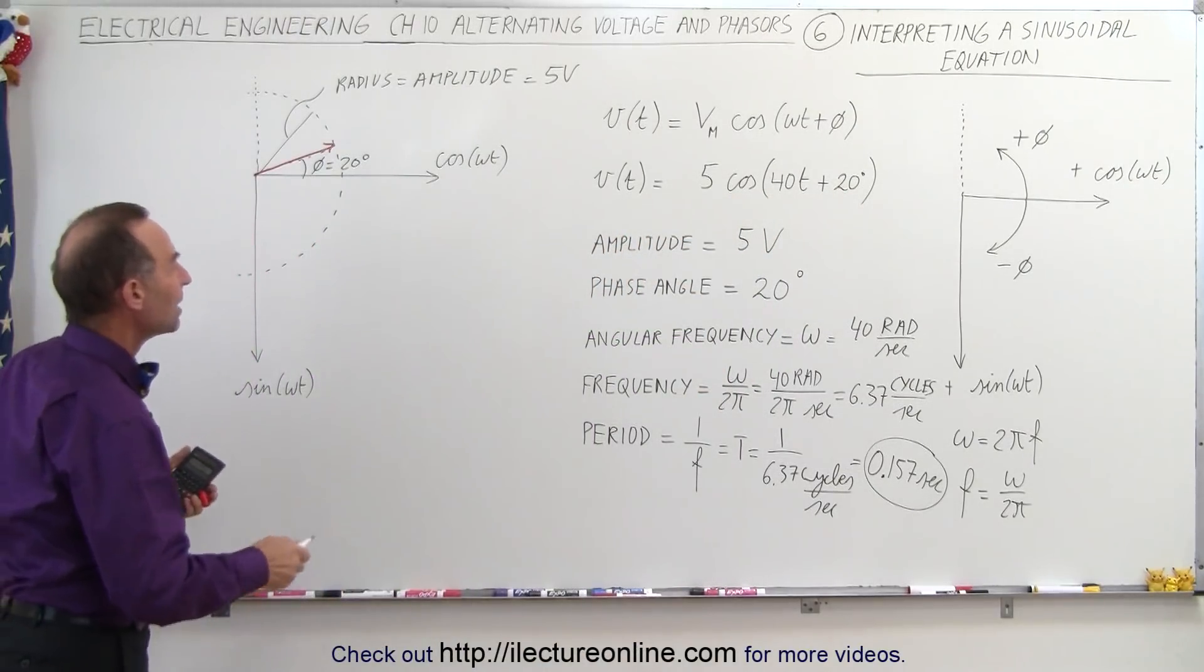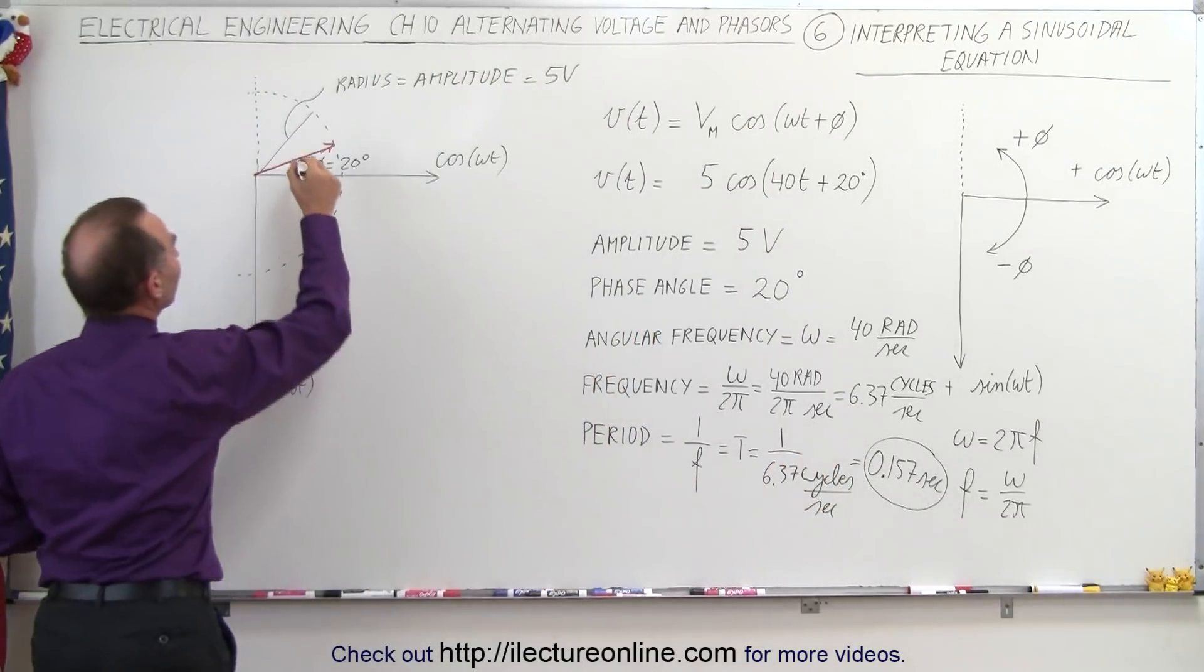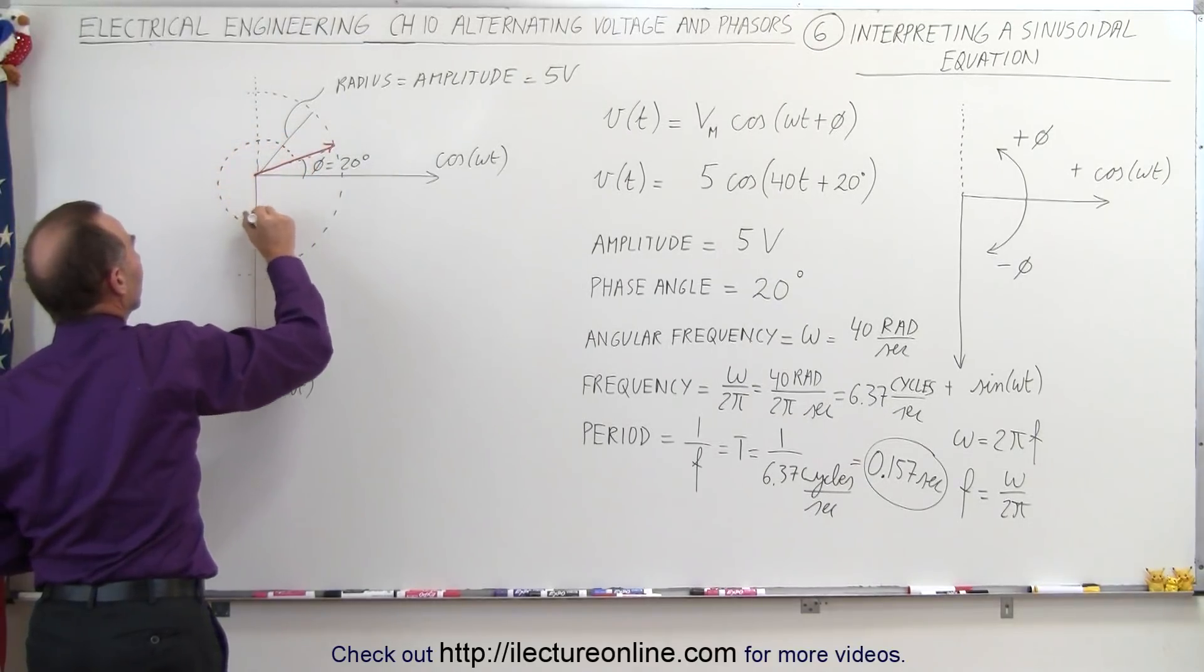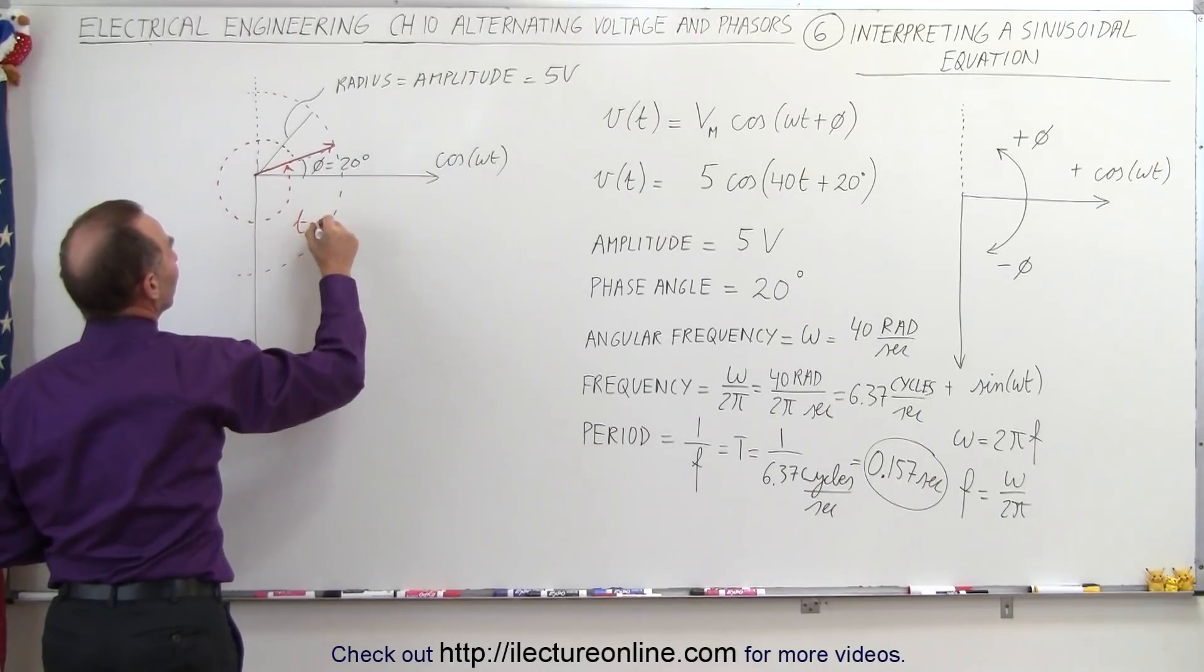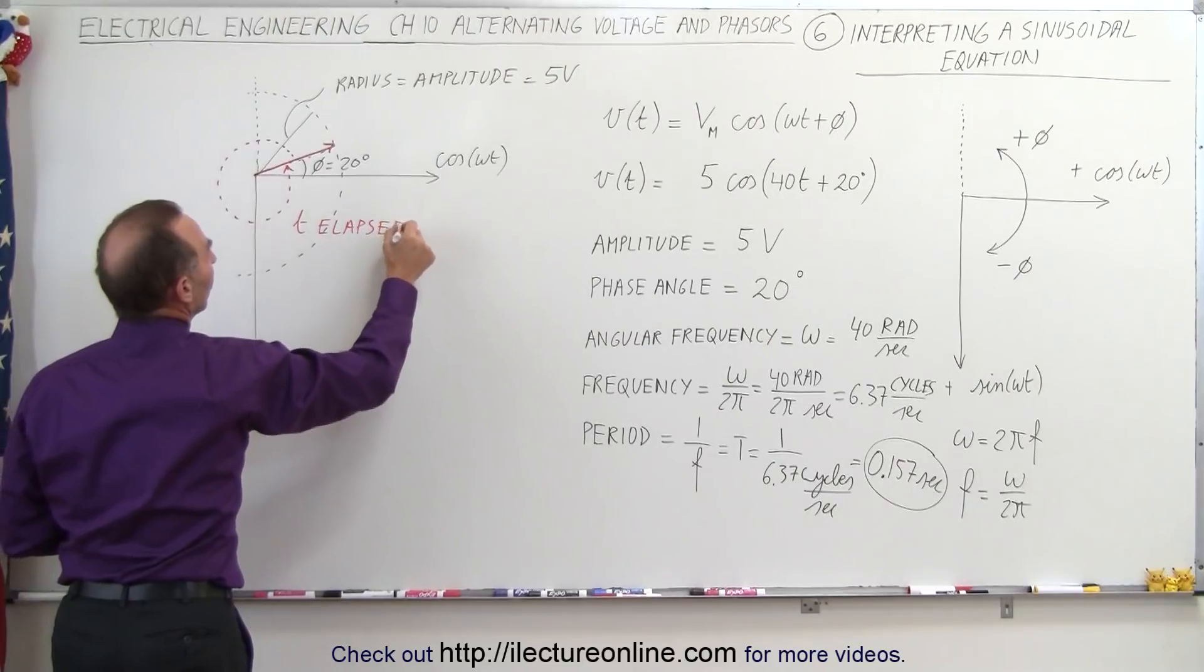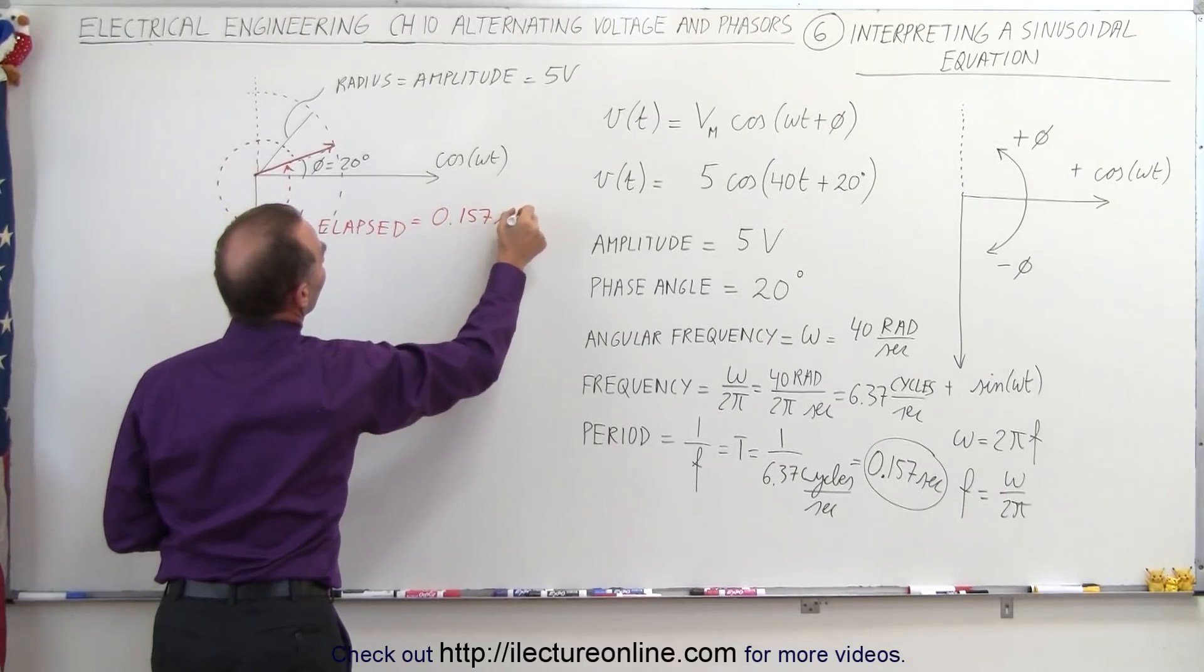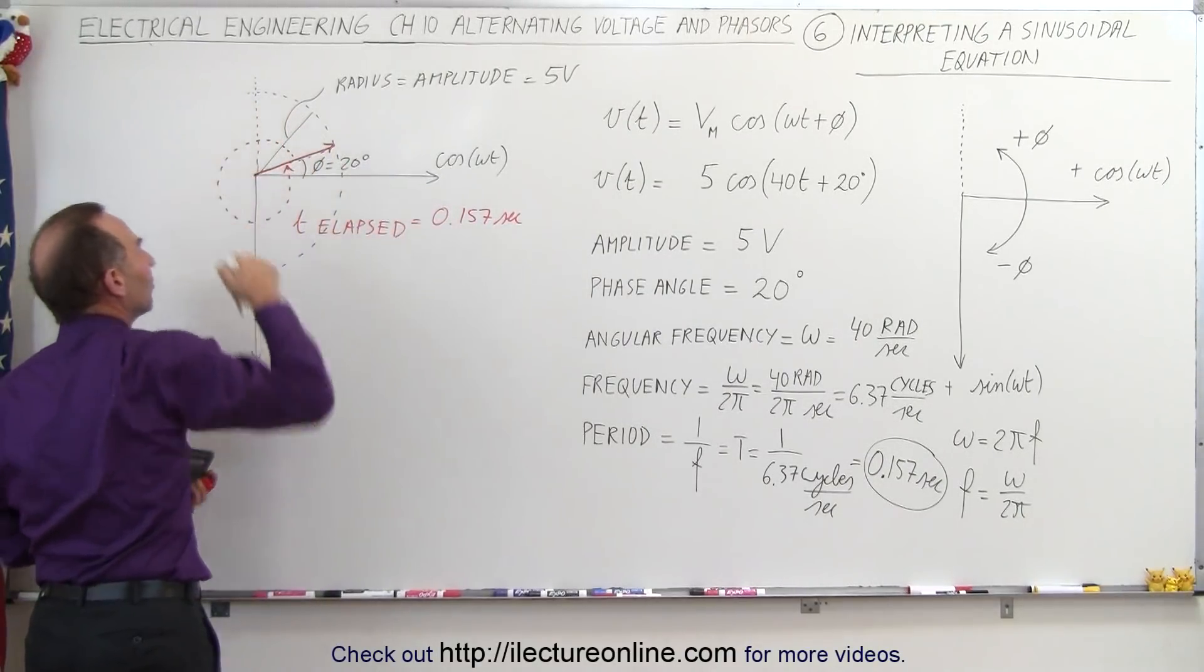What about the omega t? What does that mean? That means in a time of 0.157 seconds, this vector will rotate all the way around and get to the exact same position as before. So the time elapsed to make one complete cycle will be equal to 0.157 seconds.